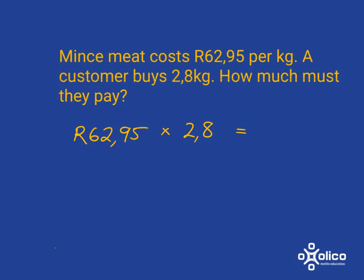So what you're going to do is use your rounding. Look at 62,95 — let's ignore all the complexities and round it down to the nearest 10. That is around 60 rand. And 2,8 — let's round that to the nearest whole number, which will be 3. And so we know our answer should be somewhere close to 180.